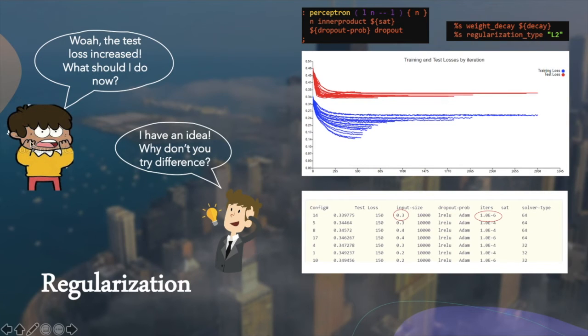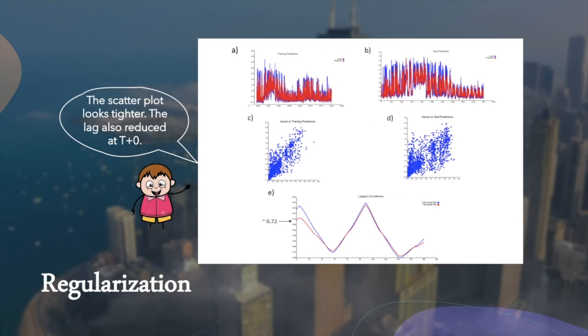So to reduce the overfitting, we tried to introduce regularization and dropout. But it turned out that our test loss actually increased and the overfitting remains. Although the lag actually increased by 0.04 to the value of 0.72.